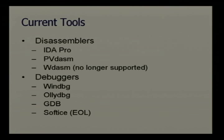WDASM used to be the preferred disassembler for cracking software protection, but it hasn't been maintained in a very long time. For debuggers, most of us are doing reversing for Win32 because we have no source, so most of this talk is geared towards that. You can reverse things for Unix-type platforms, but generally because of open source, we have the source available.